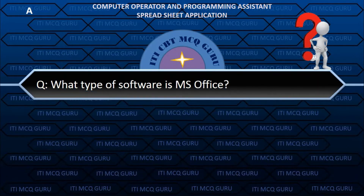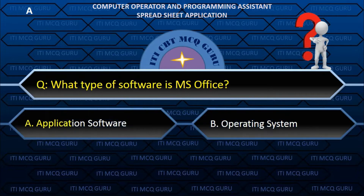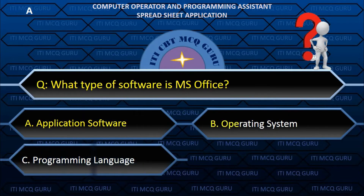What type of software is MS Office? A. Application software.